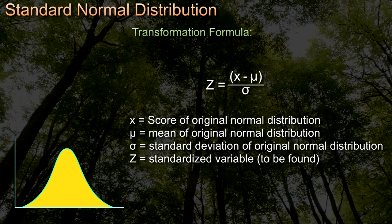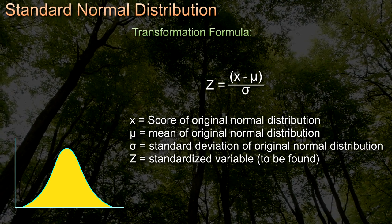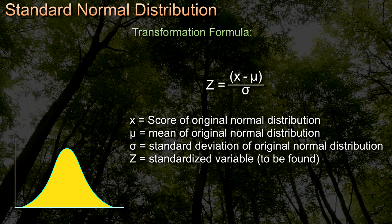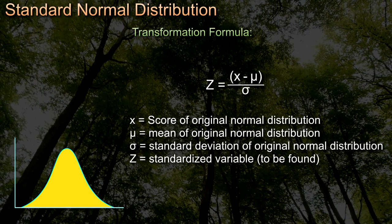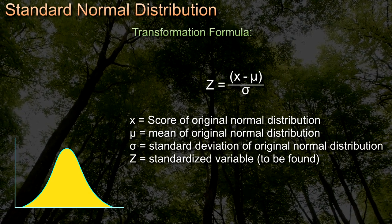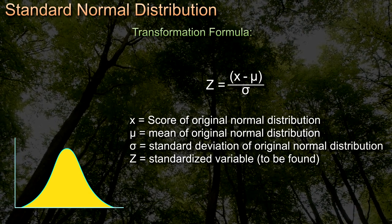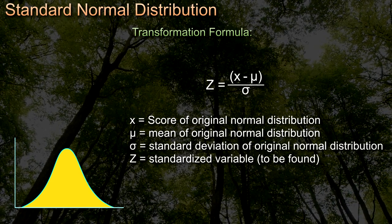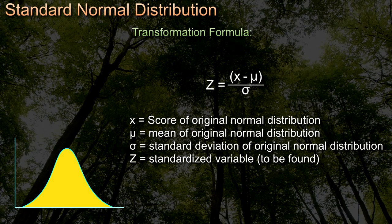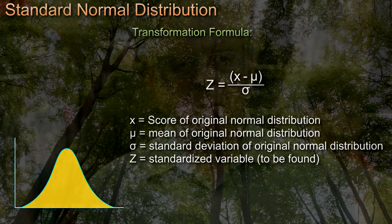Be aware: whilst any normal distribution can be transformed using this formula, the formula will not convert a skewed distribution into one that is not skewed. So we're looking at our theft problem because the theft data conforms to a normal distribution. Let's suppose the store loses, on average, about £200 a day, and we know the standard deviation of the daily loss is £30.